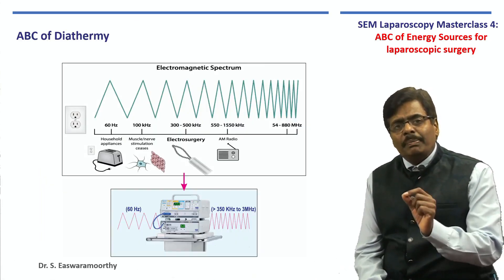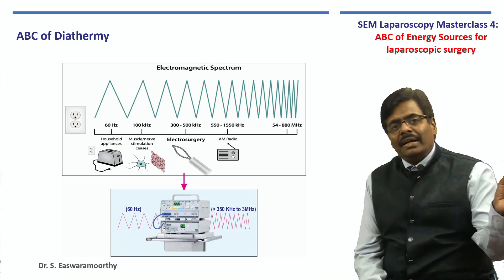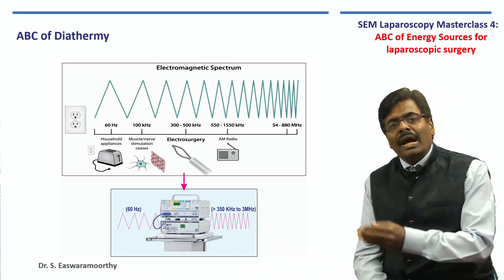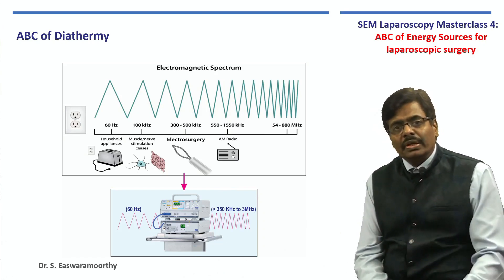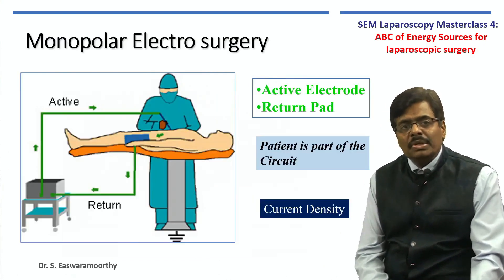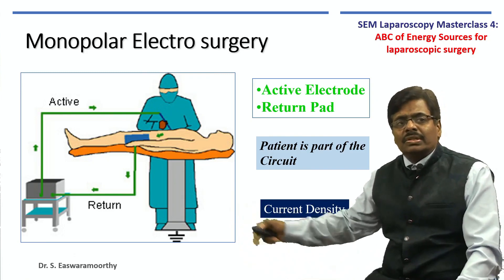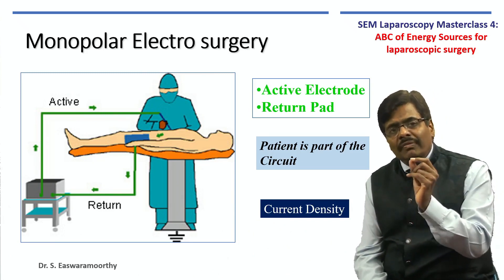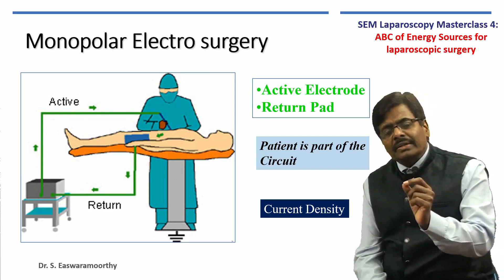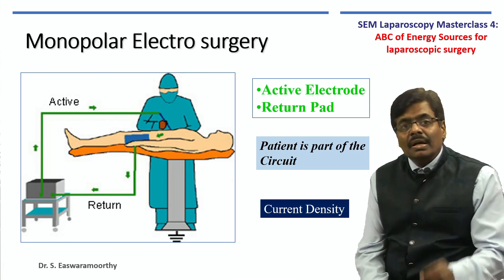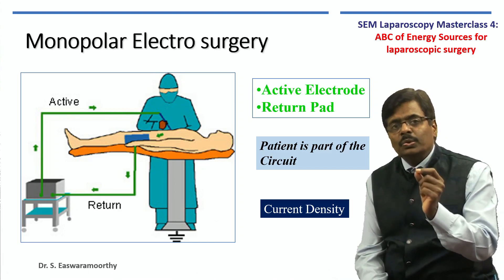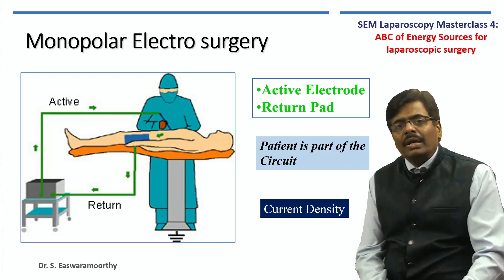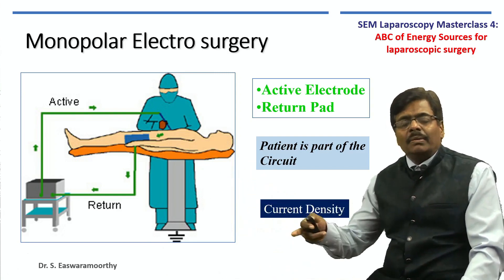When we plug in the diathermy machine to our electrical supply, the low-frequency household alternating current is converted into a very high-frequency current — that is all the machine is doing at its core, but a good diathermy machine will do a lot more. The electrons coming from the machine, once activated, go through the active electrode and cause the desired effect wherever you apply it. After that, the electrons travel through the patient — the patient is part of the circuit in monopolar electrosurgery — travelling through the path of least resistance.